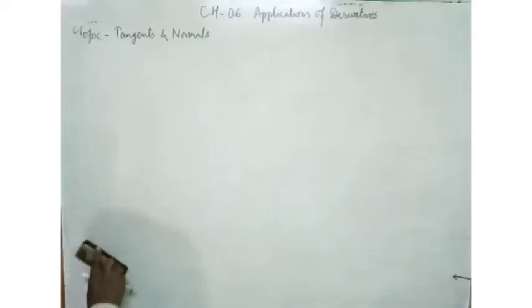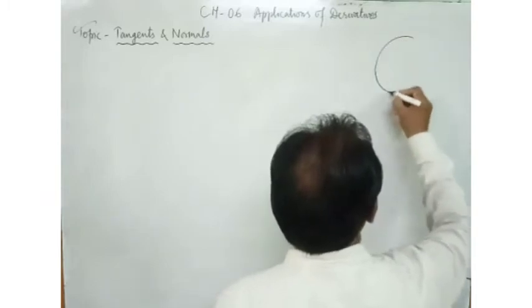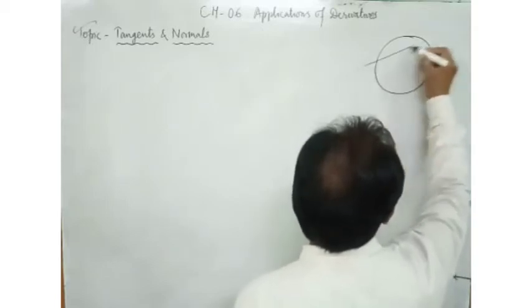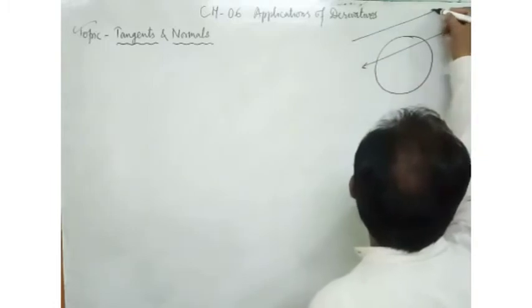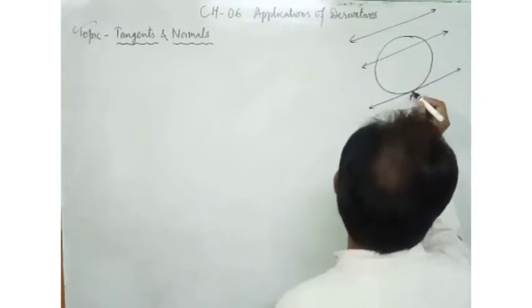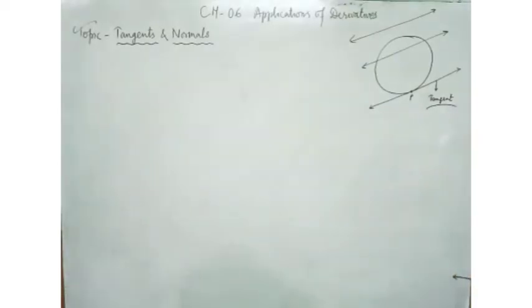Let us start the next topic: tangents and normals. First, we shall develop the concept of tangent. In the chapter on circles in class 10, you have studied that if a line and a circle are given, then either the line intersects the circle in two distinct points, or it is completely outside the circle, or it is outside the circle but touching the circle at a point P. This line touching the circle at a unique point — one and only one point — is called a tangent.